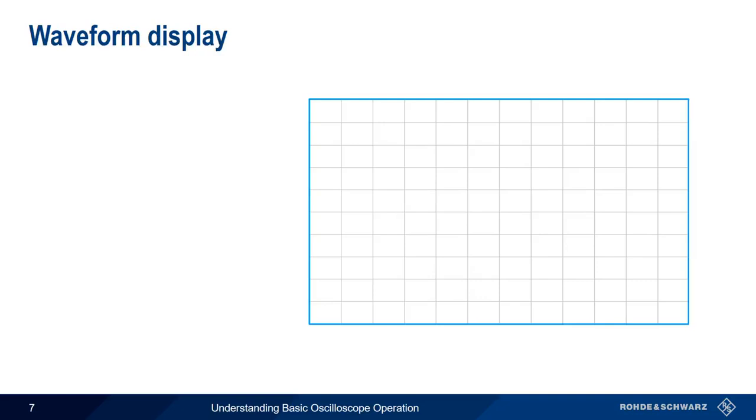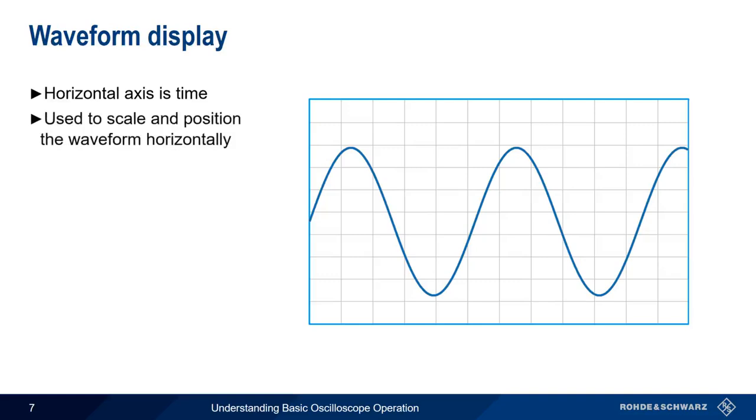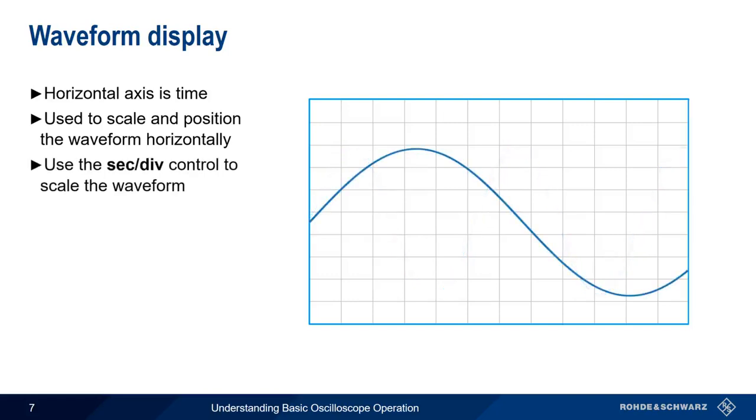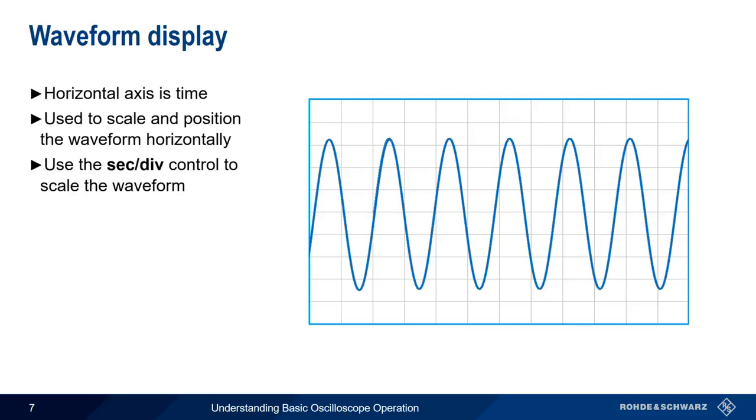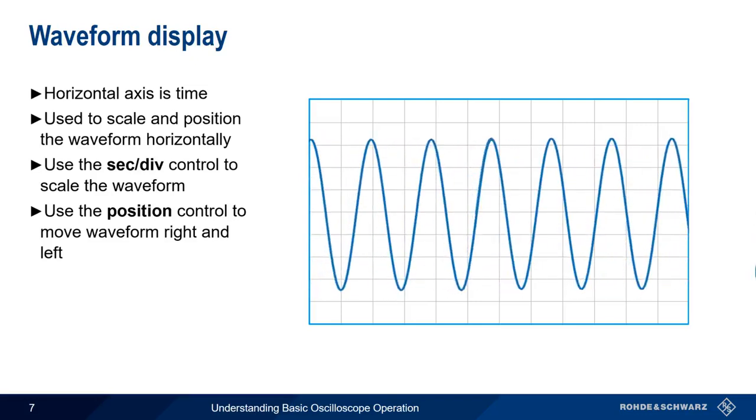Waveform display controls in the horizontal system are related to the horizontal axis, which corresponds to time. We can use these controls to scale the waveform and change its horizontal position. Similar to volts per division in the vertical system, seconds per division changes the duration of each division, and thus how much or how many cycles of the waveform we see on the screen. And as before, our position control moves the waveform right or left on the screen.